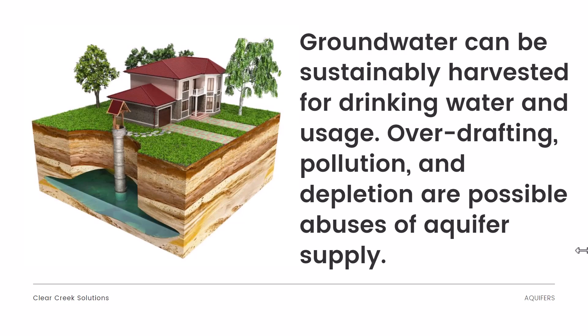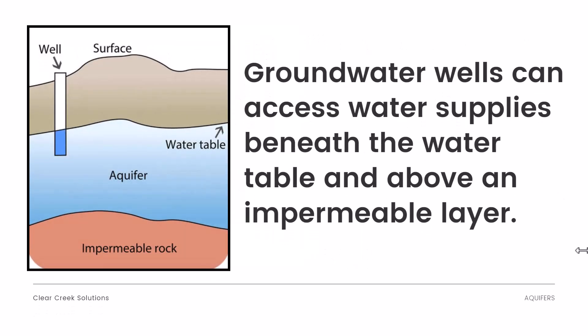However, if we overharvest, overdraft, or allow pollution to seep into the soil — which can dirty the water and cause it to be undrinkable — this will be an abuse of the supply of aquifers. The water supply of aquifers, especially freshwater supply, is incredibly crucial to the water cycle and providing drinking water to organisms and humanity itself.